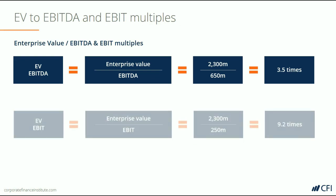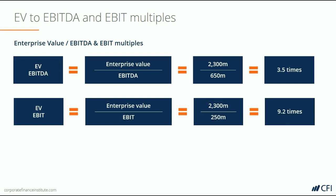Let's compare that to the EV to EBIT multiple. EBIT is only 250 million, so this multiple is 9.2 times.